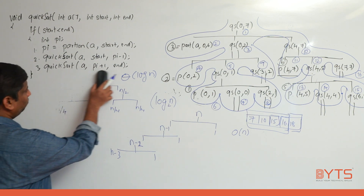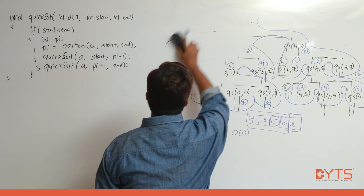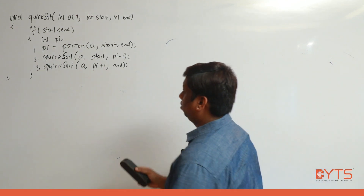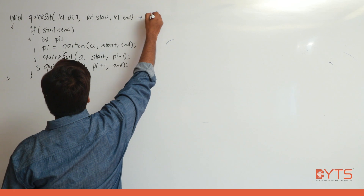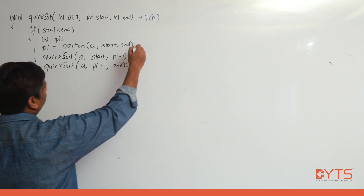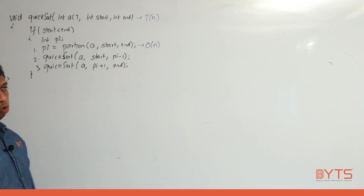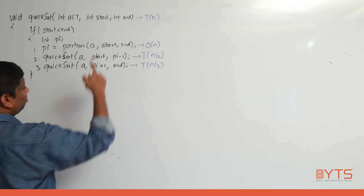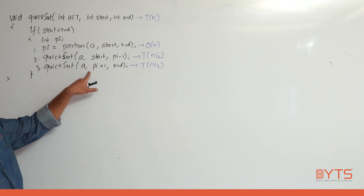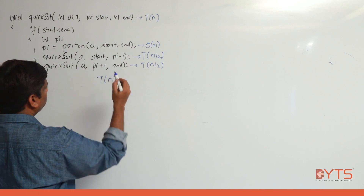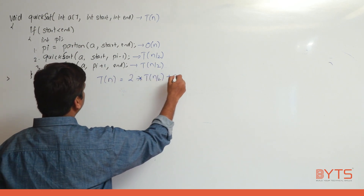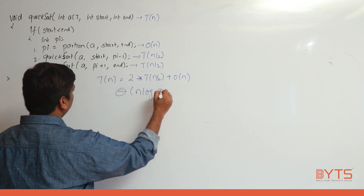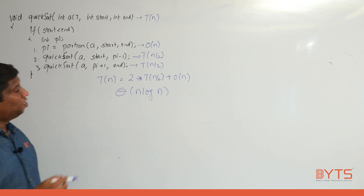Now we'll see the time complexity. Let this function execute in T(n) units of time. The partition loop runs in O(n). Assuming the partition divides the array into two halves of n/2 each, the recurrence is T(n) = 2·T(n/2) + O(n). Applying the Master's Theorem, we get theta of n log n.